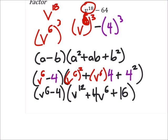Now again, you could check by multiplying everything together and just making sure you end up with v to the power of 18 minus 64. But what I'm talking about in terms of factoring more stuff out is this v to the power of 6 minus 4.